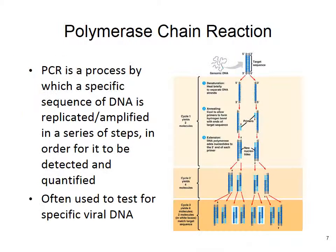PCR — polymerase chain reaction — is a process by which a specific sequence of DNA is replicated and amplified in a series of steps so it can be detected and quantified. Looking at the diagram: we take our target DNA sequence, heat it to separate the strands, add primers, replicate, and keep replicating the region of interest until there's enough to positively detect and quantify it. This is important because viruses are present in such tiny amounts that they can be hard to detect without PCR.